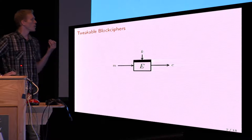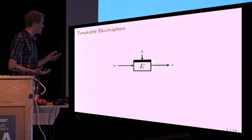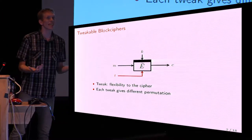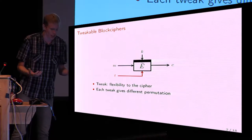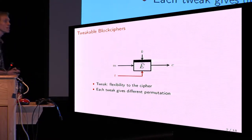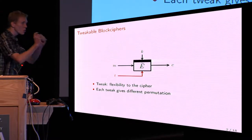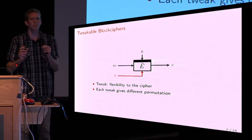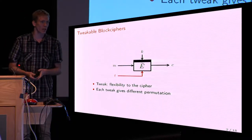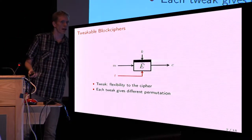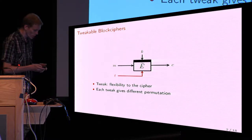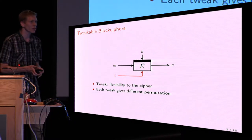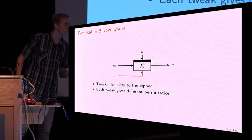A way to get flexibility is by using a tweak. The idea is that for every key and fixed tweak, the scheme behaves like a permutation. But if you change the tweak, you get an independent permutation. There are many applications of tweakable block ciphers — format-preserving encryption is one, and another very popular one is authenticated encryption. I would like to give you an example of this.